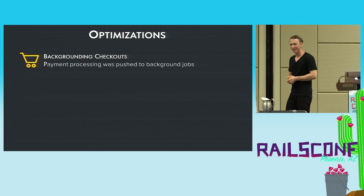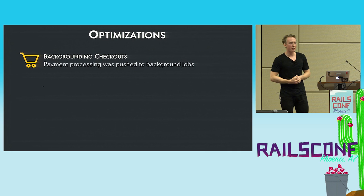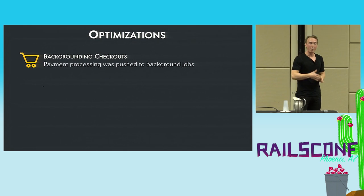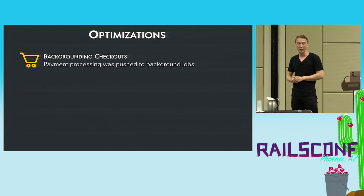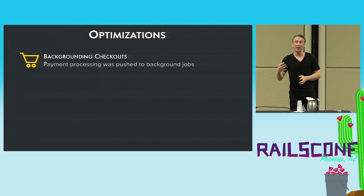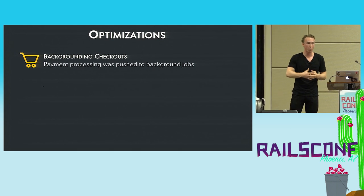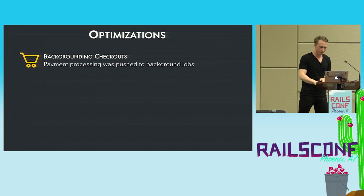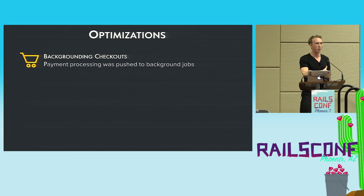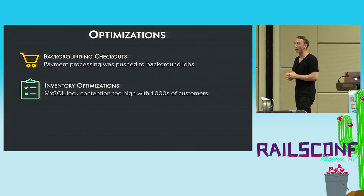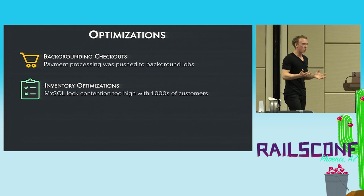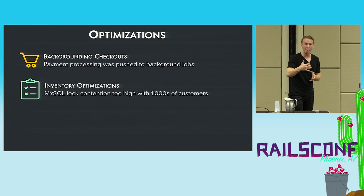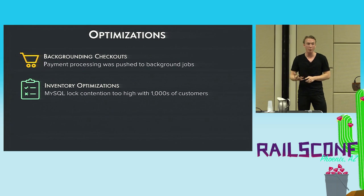For us, the first wins were things like backgrounded checkouts. This sounds crazy — what do you mean they weren't backgrounded? Well, the app was started in 2004-2005, and back then backgrounding jobs in Ruby or Rails wasn't really a common thing. In 2012, a team collected the massive amount of technical debt to move the checkout process into background jobs, so payments were captured asynchronously rather than in long-running requests occupying all the workers. Another domain-specific problem was inventory — you might think it's just decrementing one number, but if thousands of queries are trying to decrement the same number simultaneously, MySQL hits lock contention.